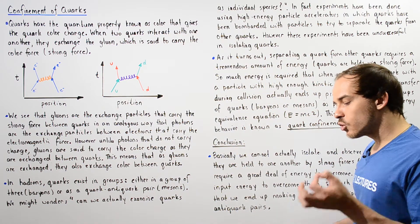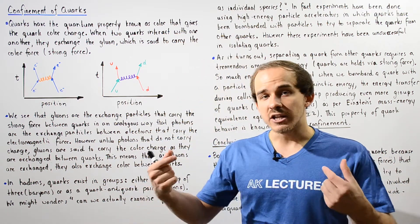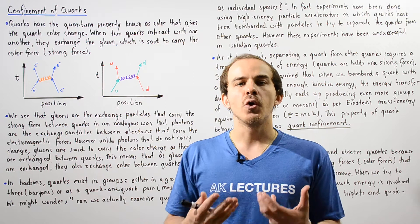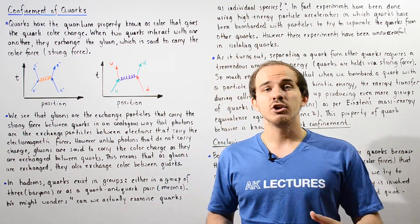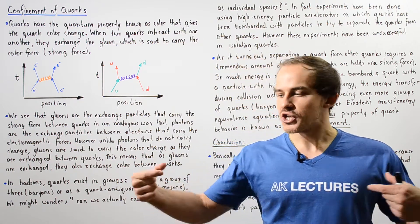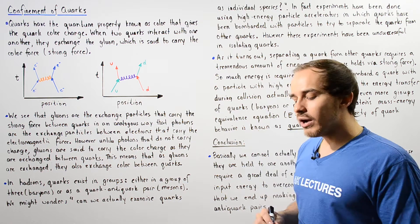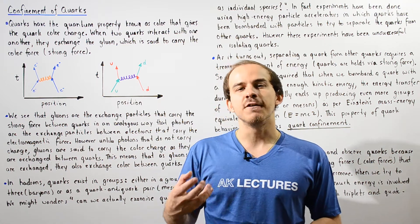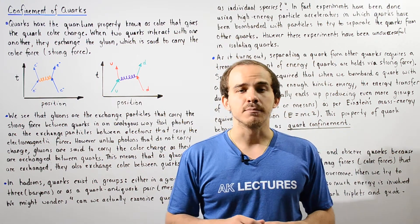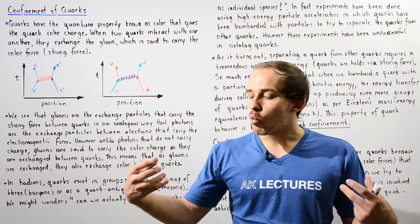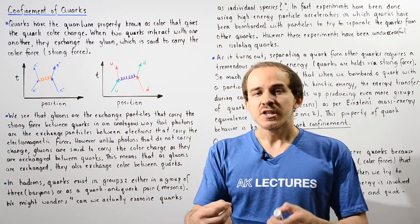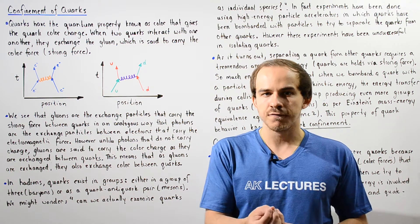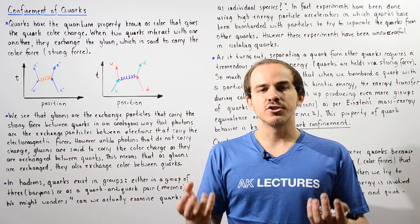From quantum electrodynamics we know that electrons interact with one another via the exchange of a fundamental particle known as a photon, and that photon is said to carry or mediate the electromagnetic force that repels our electrons. In a similar way, when two quarks interact they also exchange a fundamental particle known as the gluon, and when the quarks exchange the gluon, that gluon is said to carry or mediate the strong force, also known as the color force, that results from the color charge on those two quarks.